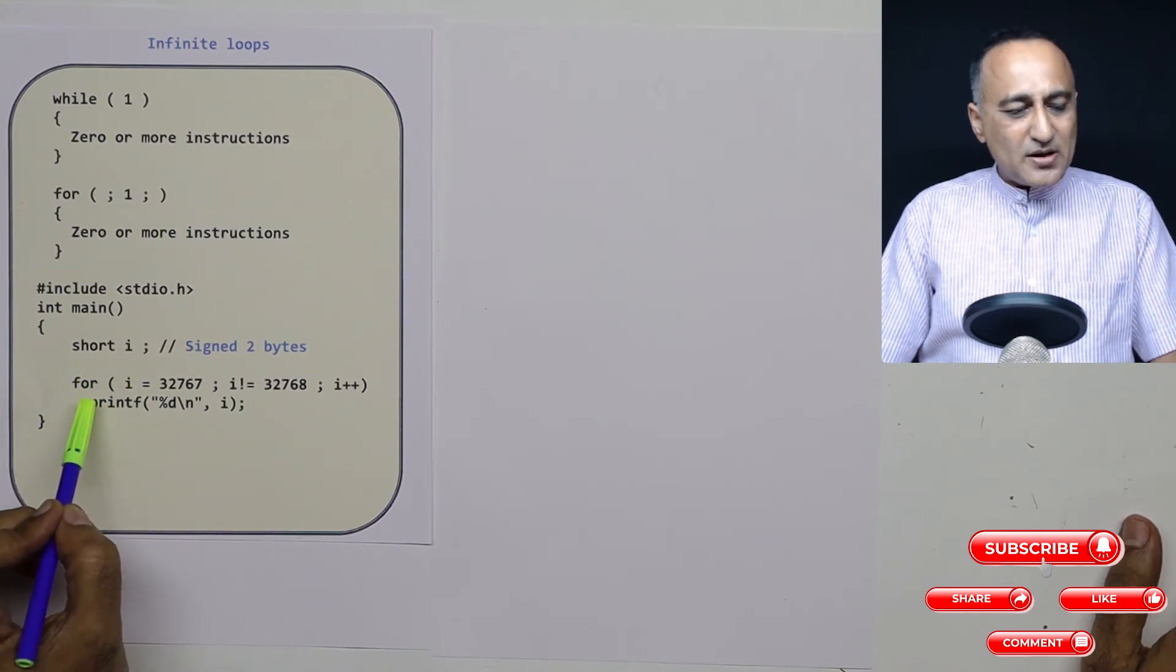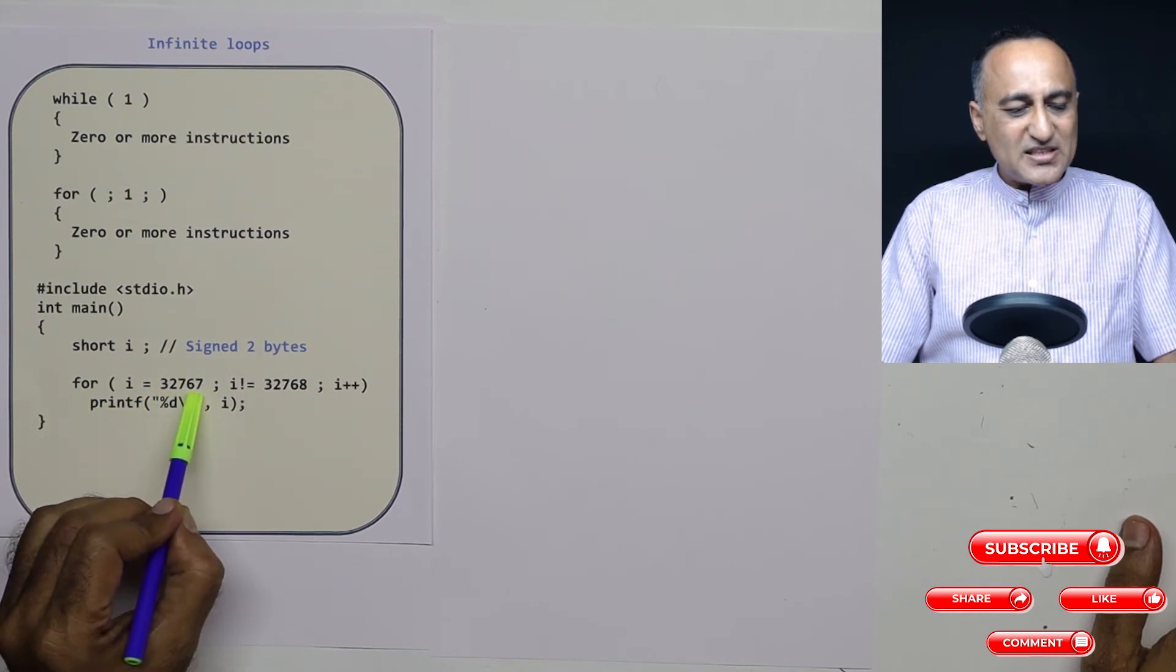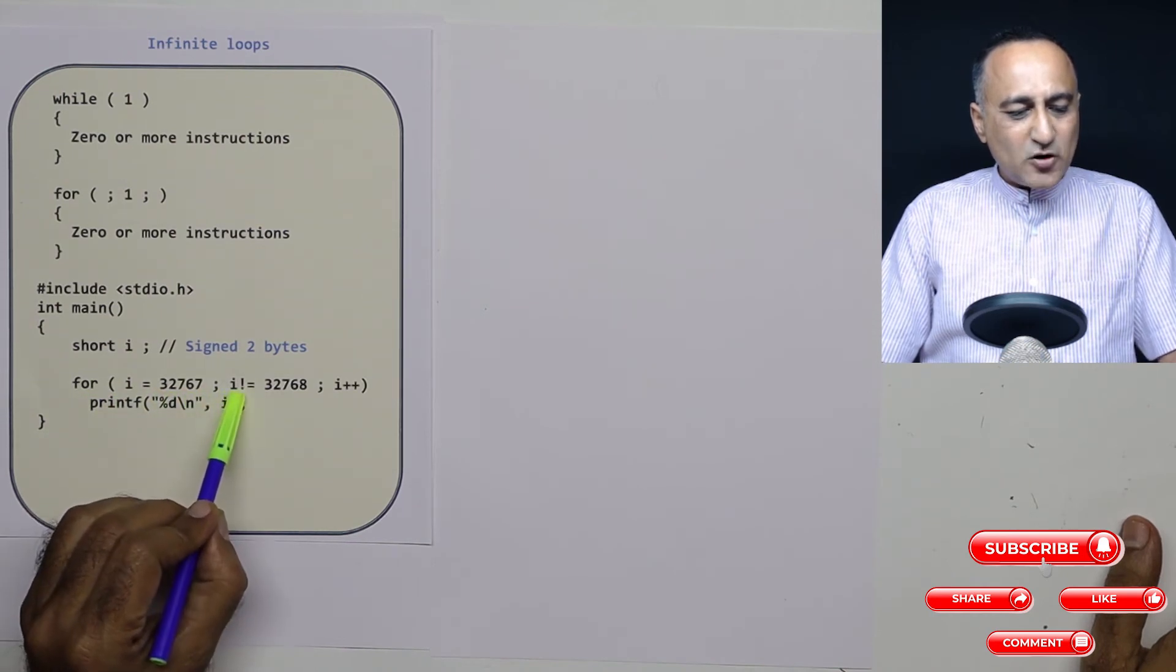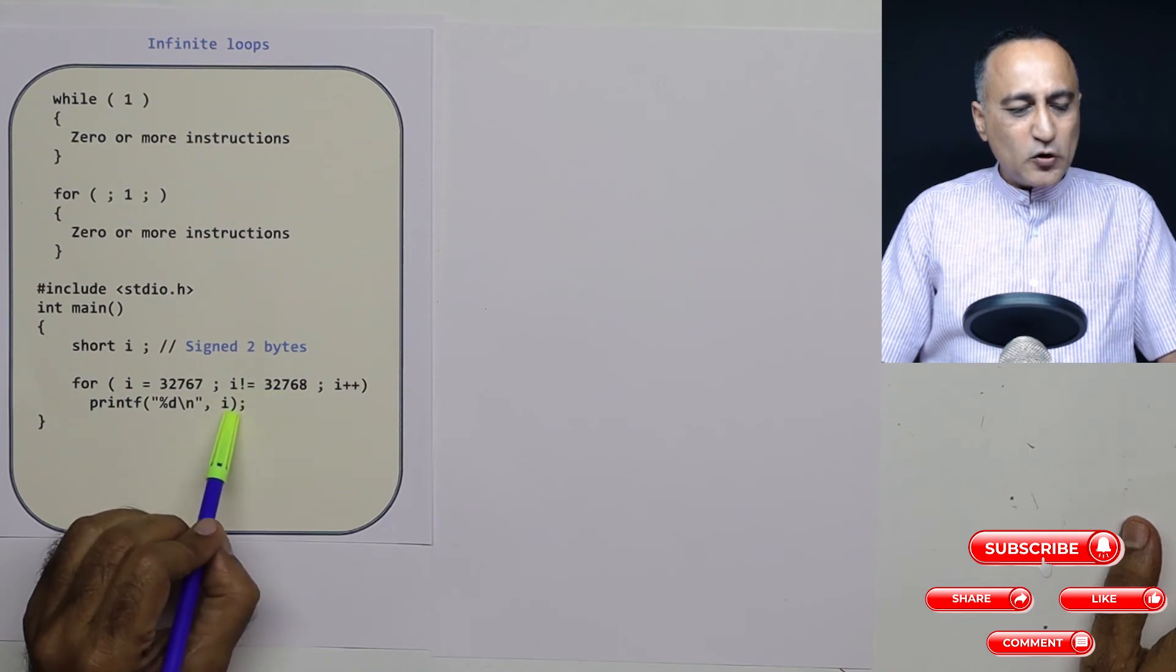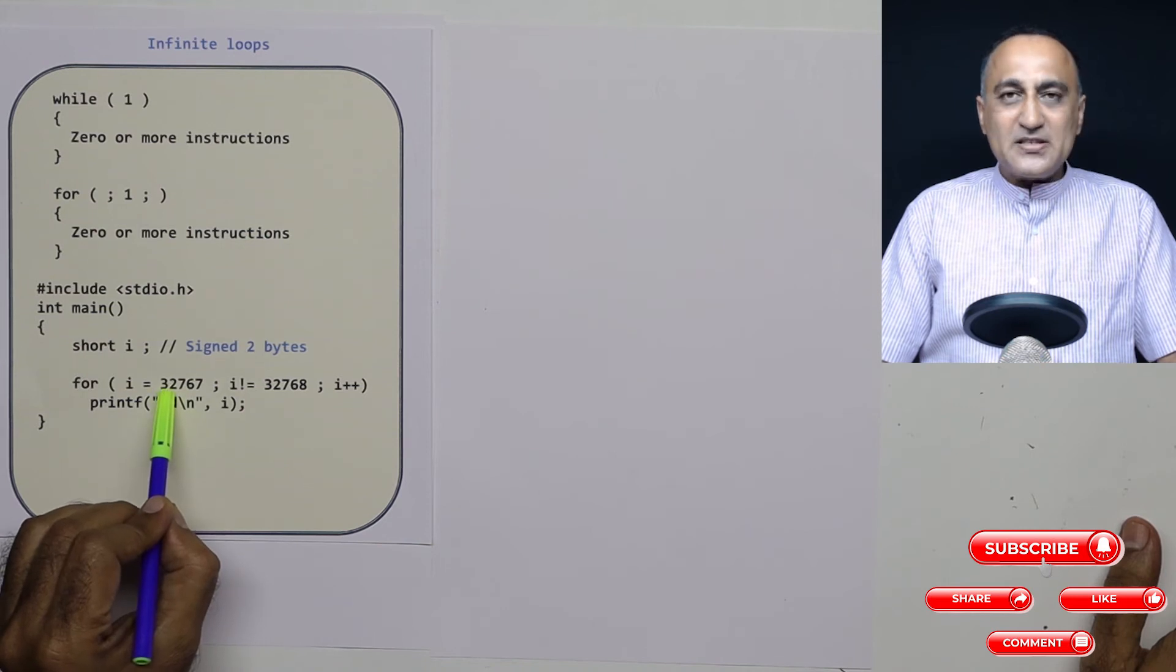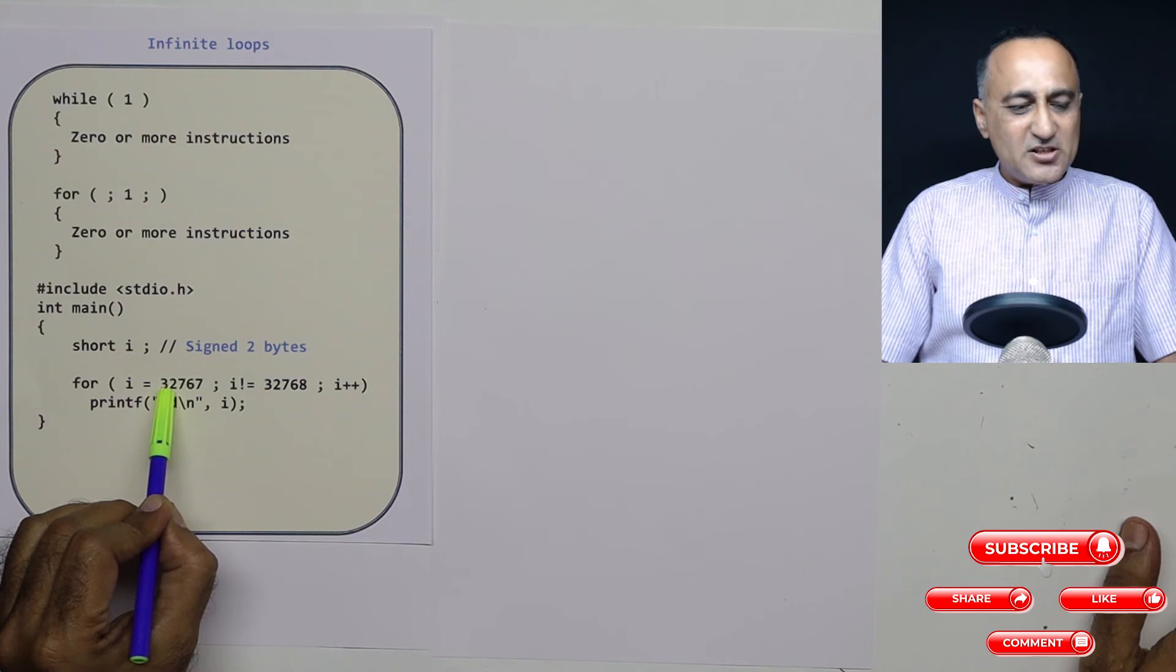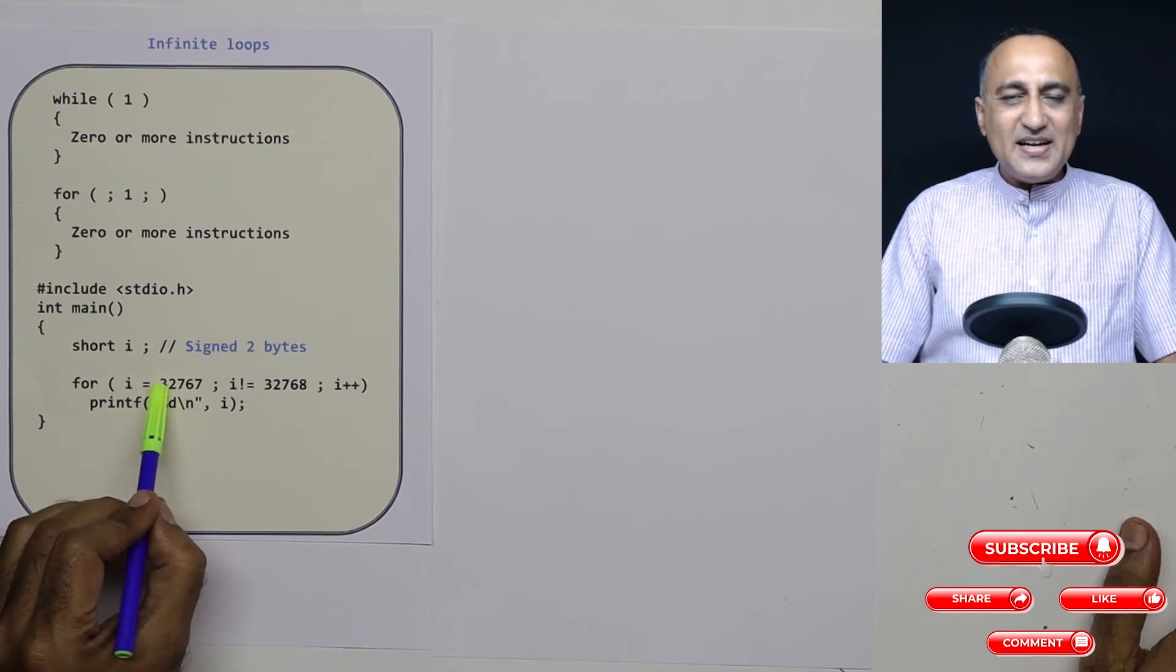Now since what I am doing here is I am initializing i to 32,767. As long as i is not equal to 32,768, it is going to print the value of i. Now this value of i represents the maximum range of a positive integer in two bytes signed short int.